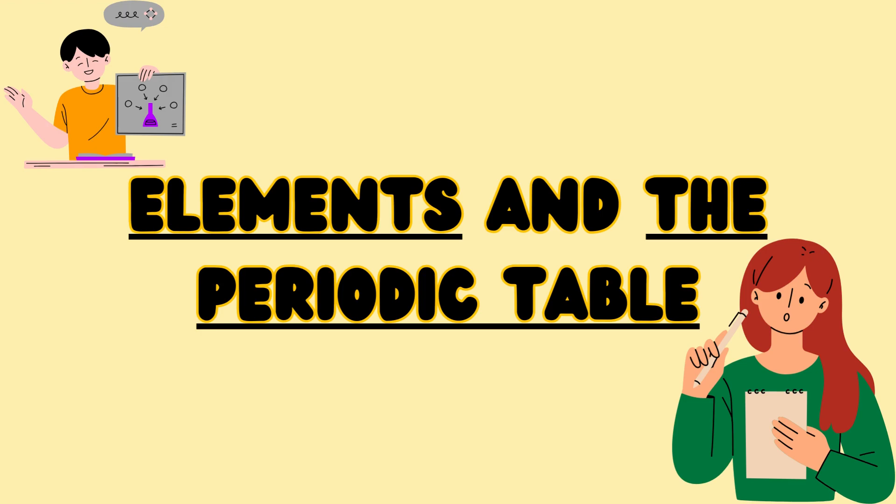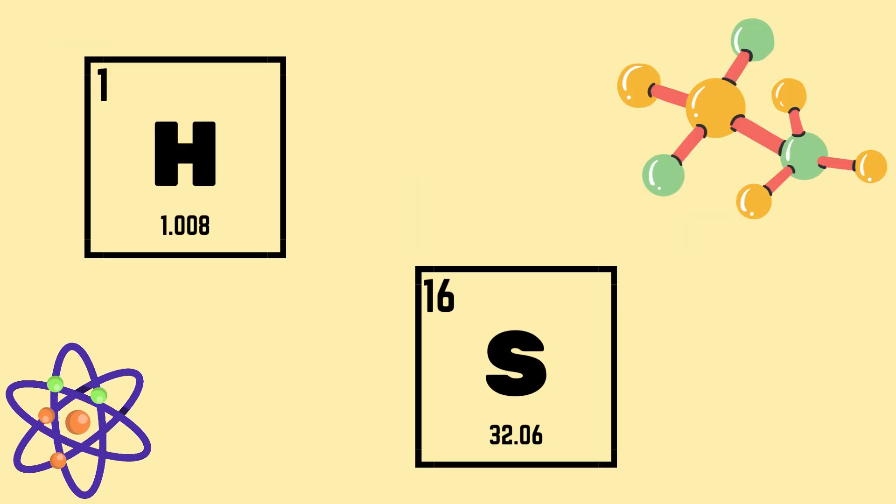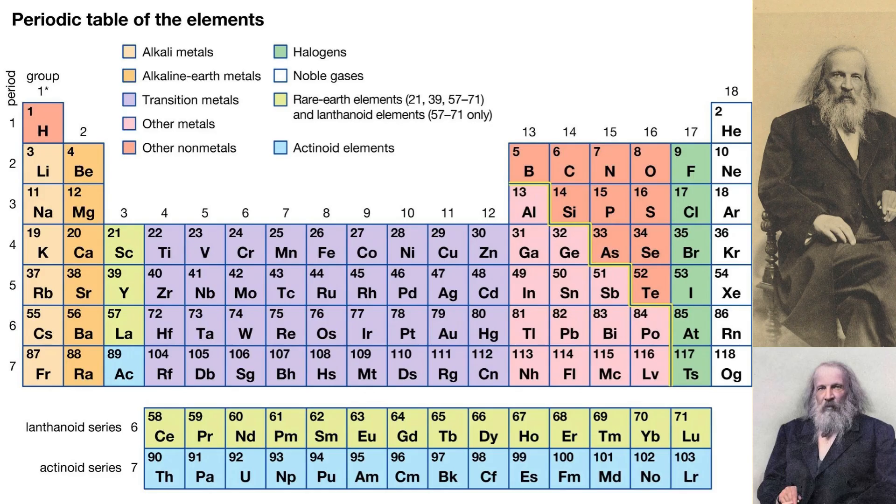Hello everyone and welcome to my channel. Today we will talk about elements and the periodic table. An element is a pure substance that cannot be broken down into simpler chemicals. An element is made up of only one type of atom. For example, hydrogen is made up of only hydrogen atoms. Scientists recognize 117 different elements.